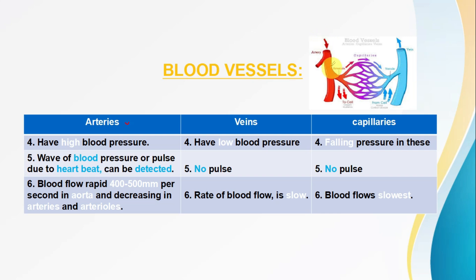Regarding blood pressure: arteries receive blood directly from the heart, so blood pressure is high in arteries. In veins, as blood is returning to the heart, the pressure is low. In capillaries, there is a falling pressure — it is even lower and does not flow by blood pressure force alone.